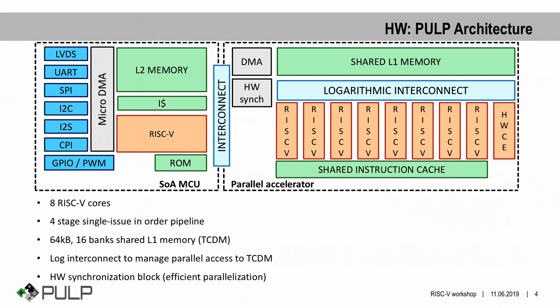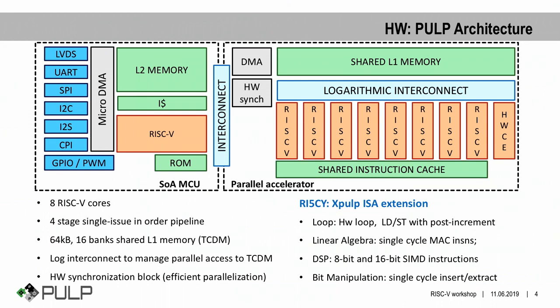More specifically, PULP consists of a state-of-the-art microcontroller accelerated by a cluster of eight RISC-V processors. The cluster features shared L1 memory accessed by cores through a logarithmic interconnect to manage parallel accesses, and a synchronization block providing fine-grained efficient parallelization of the workload. The cores are RISC-V instruction set fully compliant with RV32 IMC plus the XPULP extension, which includes zero overhead loop support, post-incremented load and store, linear algebra, DSP, and bit manipulation instructions.